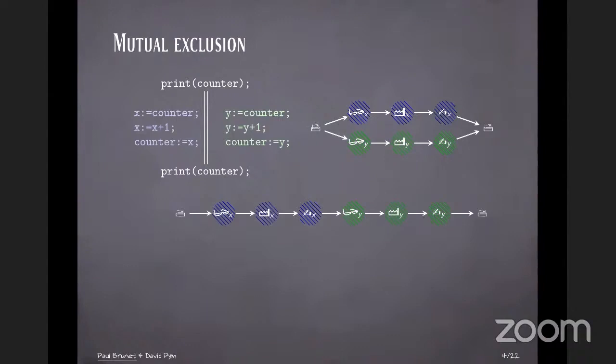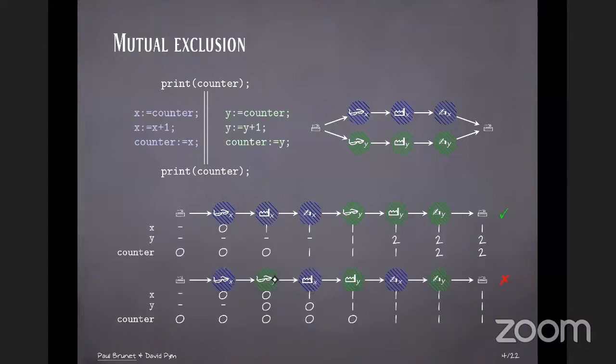And if you look at possible interleavings of this, so for instance, if you imagine the memory sequentially consistent, so everything happens as if there was a linear order, and this is another possible interleaving. But of course, the first one does the right thing in the sense that the counter is incremented twice. But the second one does not because each variable concurrently loads the contents of the variable, increments it, and then writes it. And so both threads write one. And so we don't have the results we wanted.